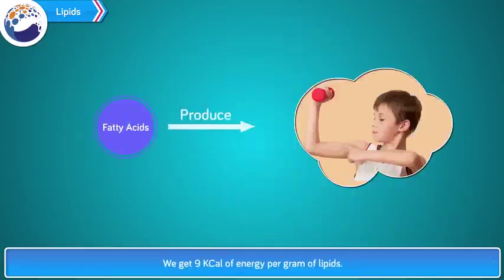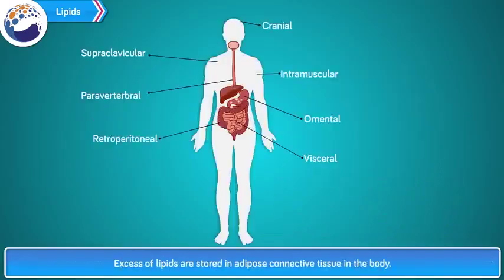We get 9 kilocalories of energy per gram of lipids. Excess lipids are stored in adipose connective tissue in the body.